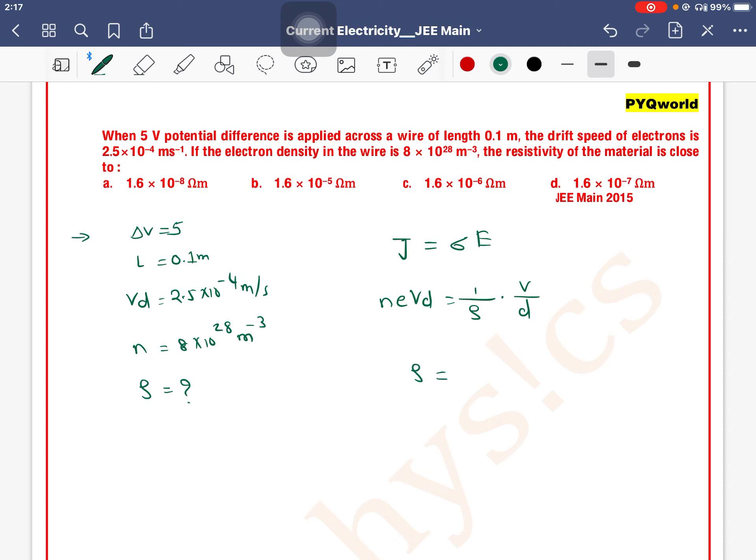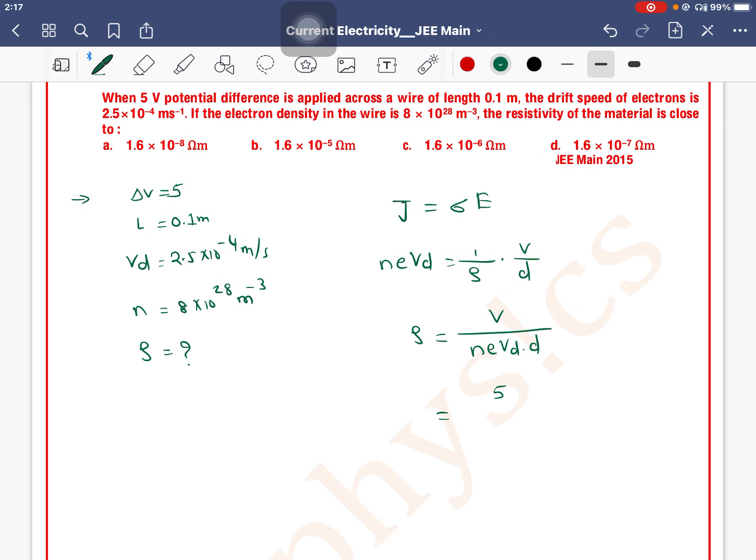So rho's formula will be V divided by n e Vd into d. V is the potential difference, which is 5 volts.